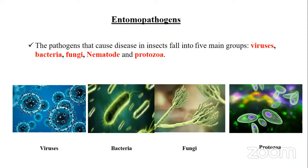Entomopathogens are classified into five categories: virus, bacteria, fungi, nematode, and protozoa — and some other organisms also cause diseases to insects. Among these entomopathogens, the entomopathogenic fungi plays a major role in controlling insect pests, causing a broad range of diseases to insects.